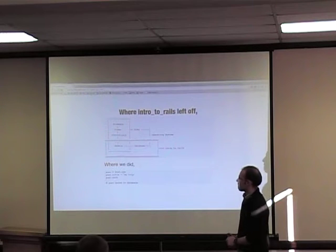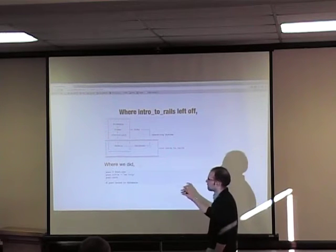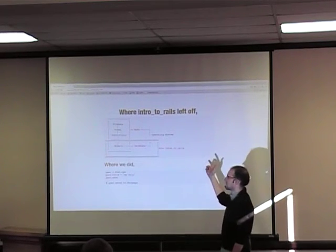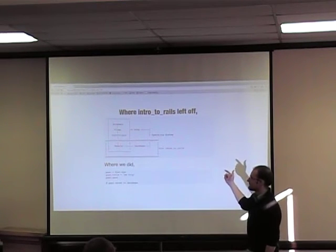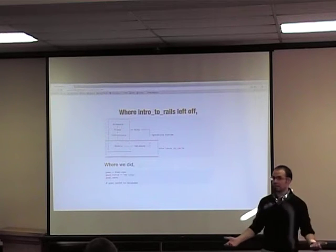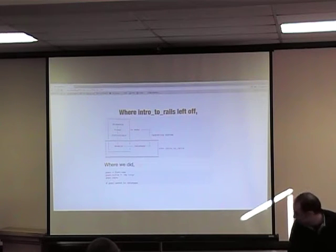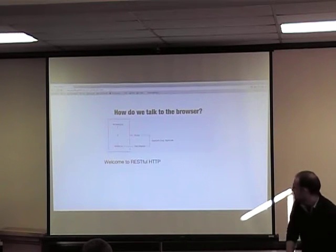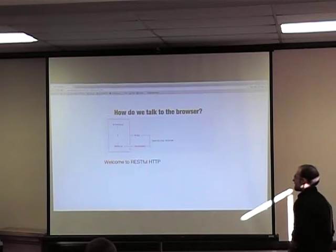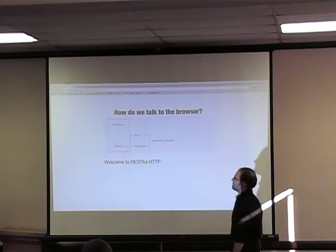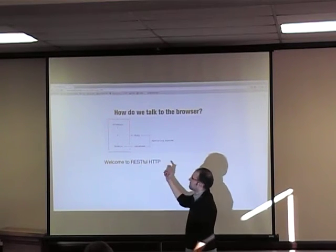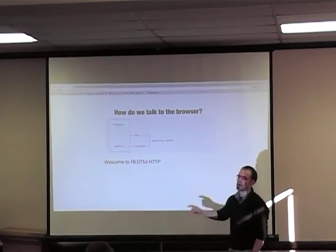In order to work with models, we created an instance of a model, we set the attributes, we saved it, and it's saved to the database. But now the question is, I've got it in my model, but how do I get my model up to the browser?